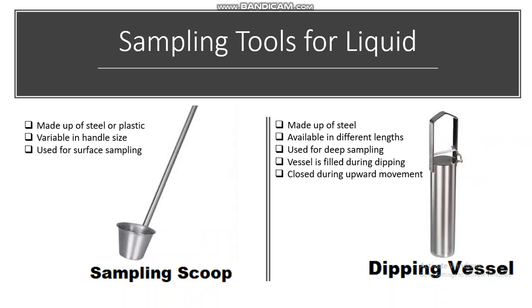The next sampling tool for liquids is the sampling scoop, which is made up of steel or plastic and has a variable handle size. It is used for surface sampling. The dipping vessel is made up of steel and is available in different lengths. It is used for deep sampling — the vessel is filled during dipping, and while in upward movement a lid closes it so the sample can be taken.